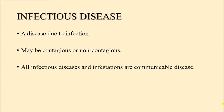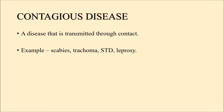Infectious disease occurs due to infection. If immunity in the person is strong, it will prevent the infectious agent from causing disease, so infectious disease may not occur even after infection. It can be contagious or non-contagious. All infectious diseases and infestations are communicable diseases. Contagious disease is a disease transmitted through contact — for example, scabies, trachoma, sexually transmitted diseases, and leprosy.